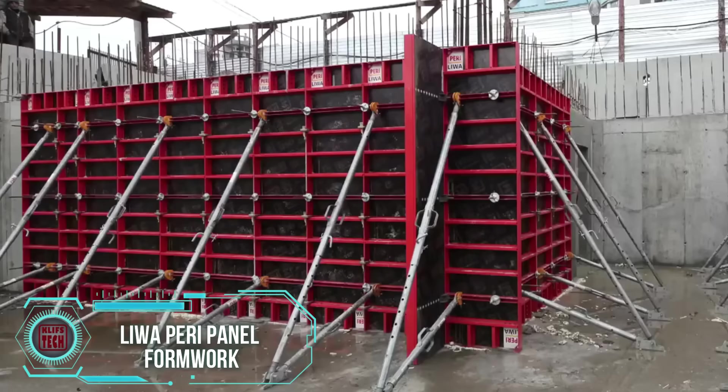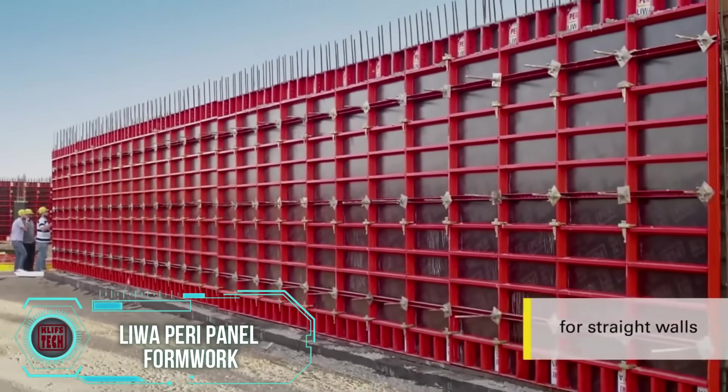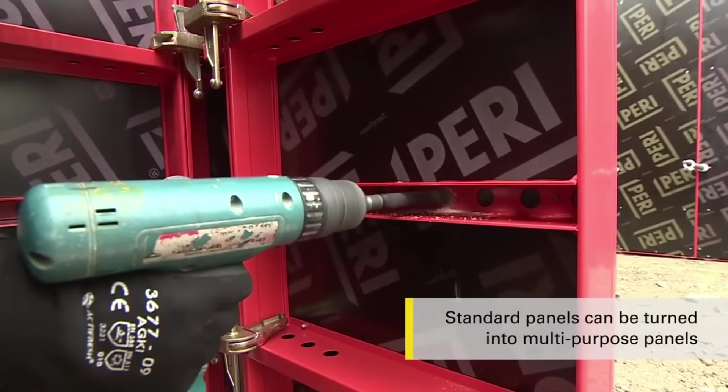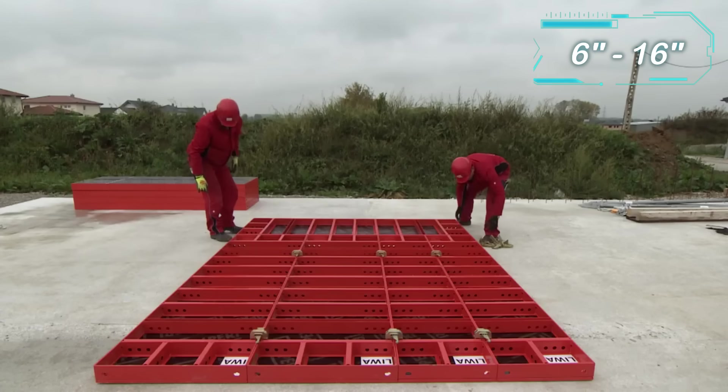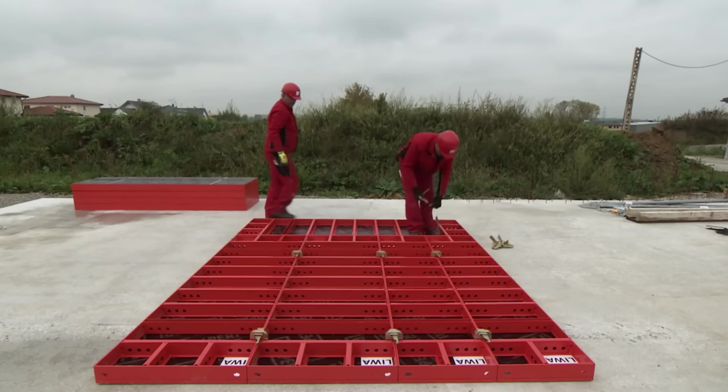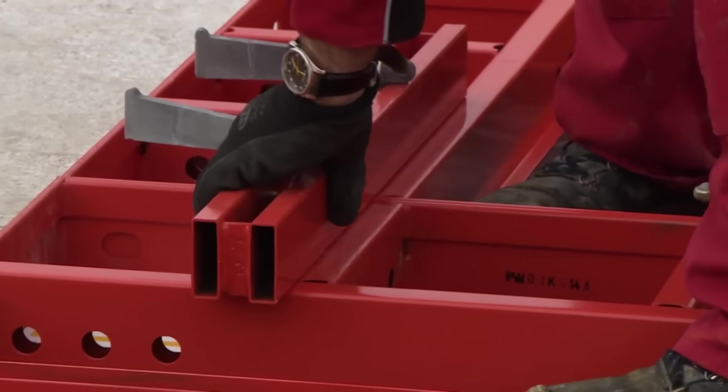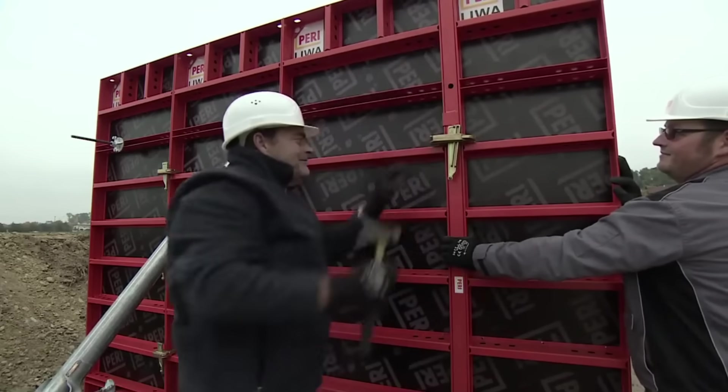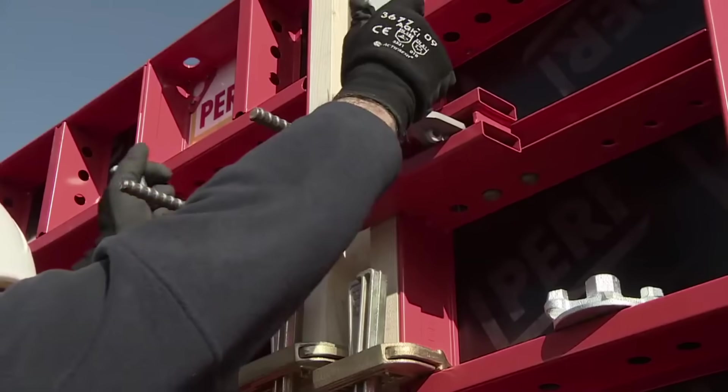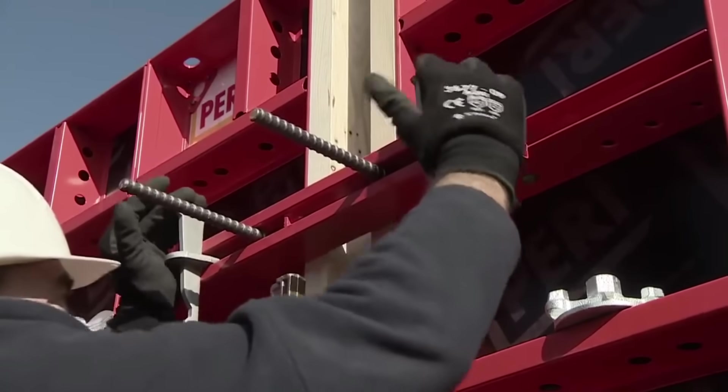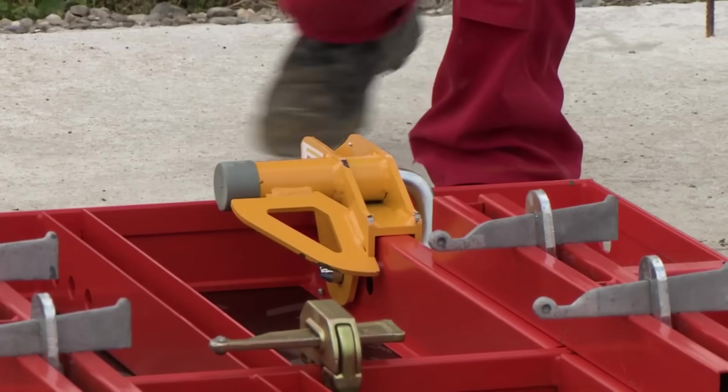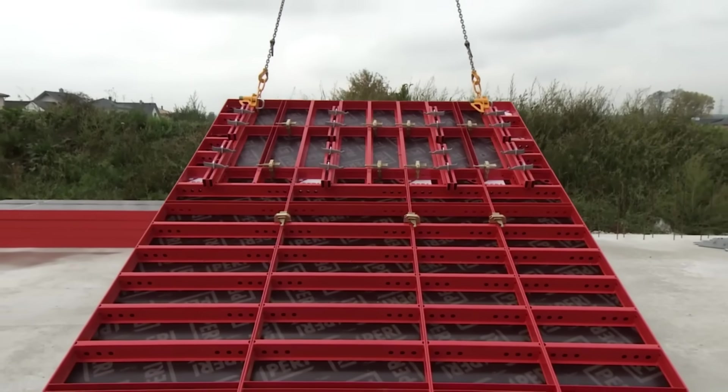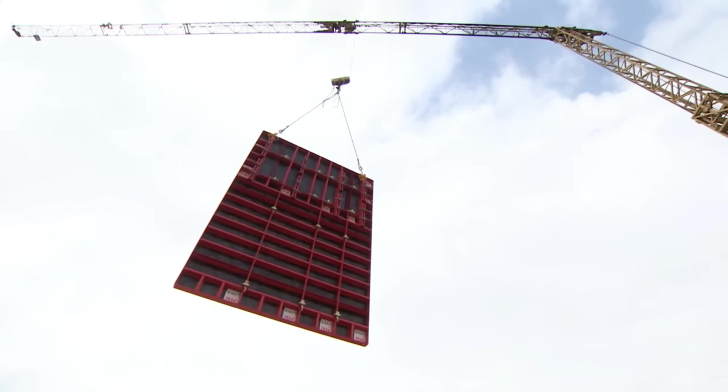No construction unveiling is truly complete without the star of the show—formwork. Feast your eyes on Perry's Equal Wall Formwork, stealing the spotlight on the screens. Tailored for wall thicknesses spanning 15 to 40 centimeters, this formwork boasts simplicity in operation, eliminating the need for a crane and promoting standardization. Each piece is a versatile player, ready for decking, column shaping, and even serving as a corner piece. With a structural thickness of just 10 centimeters, transportation and handling become a breeze. Perry's Equal Wall Formwork is not just a construction tool, it's a game changer, ensuring your building projects stand tall with ease and efficiency.